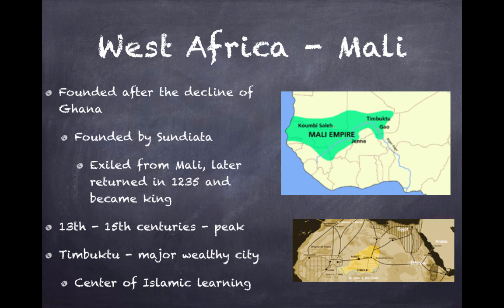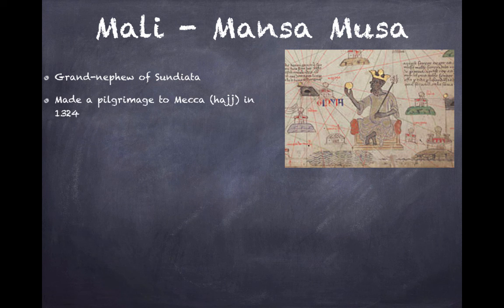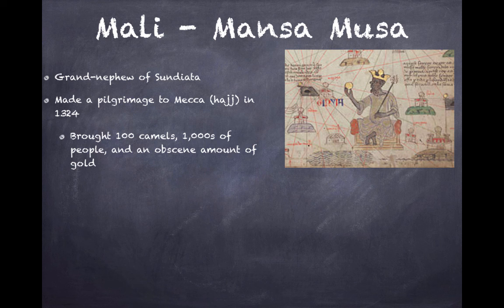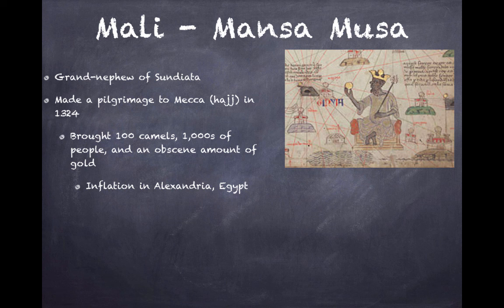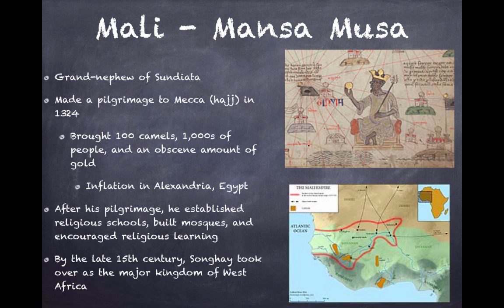Timbuktu was also a center for Islamic learning. Mansa Musa is an important figure in Mali history — he was the grand nephew of Sundiata, and he made a pilgrimage to Mecca, the Hajj, in 1324. He brought 100 camels, thousands of people, and an obscene amount of gold that he spread everywhere he went — so much gold that there was inflation in Alexandria, Egypt. After his pilgrimage, he established religious schools, built mosques, and encouraged religious learning throughout the Mali Empire. By the late 15th century, Songhai took over as the major kingdom of West Africa.